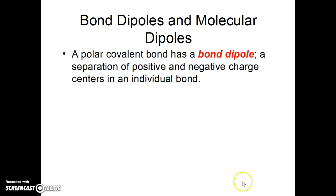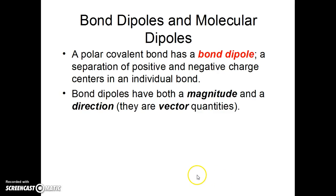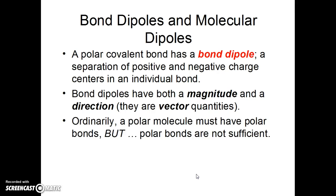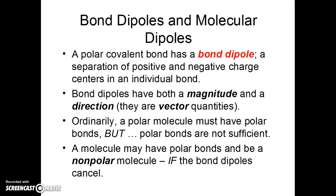A polar covalent bond has a bond dipole that separates the positive and negative charge centers in an individual bond. Bond dipoles, though, have both a magnitude and a direction. They're vector quantities. That helps to explain what we saw in the previous slides. Ordinarily, a polar molecule would have polar bonds, but having polar bonds is not sufficient to make a polar molecule. A molecule may have polar bonds and be overall nonpolar, as we saw in carbon tetrachloride, if the bond dipoles cancel.